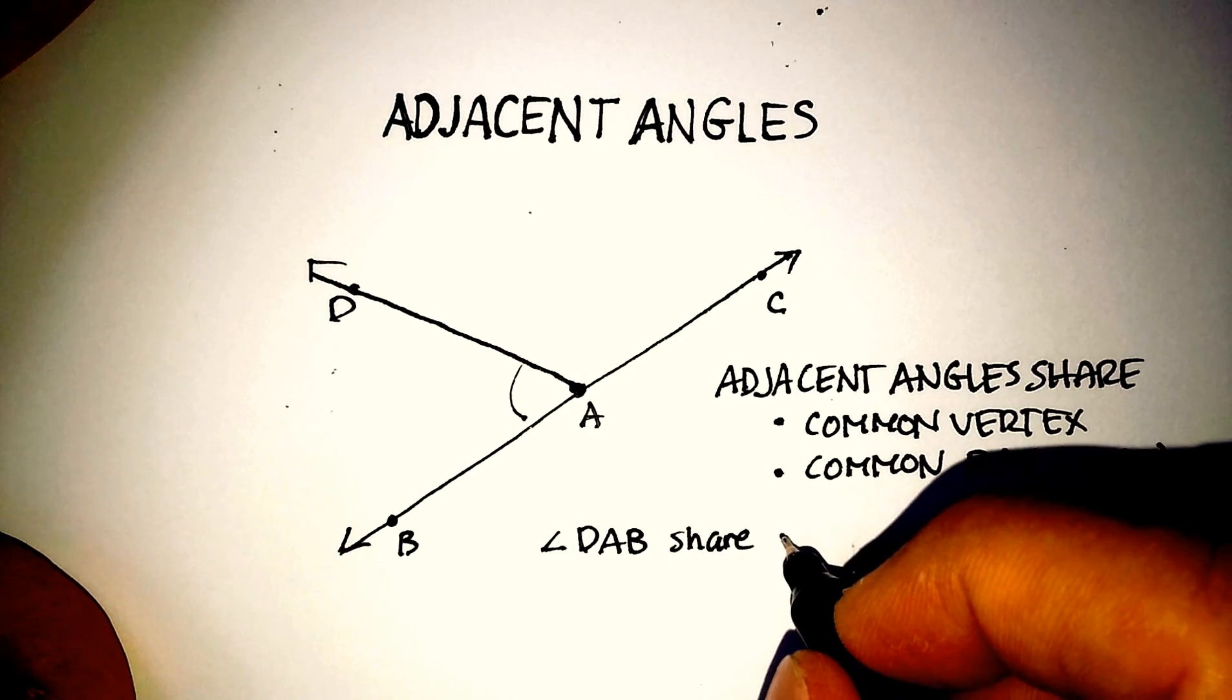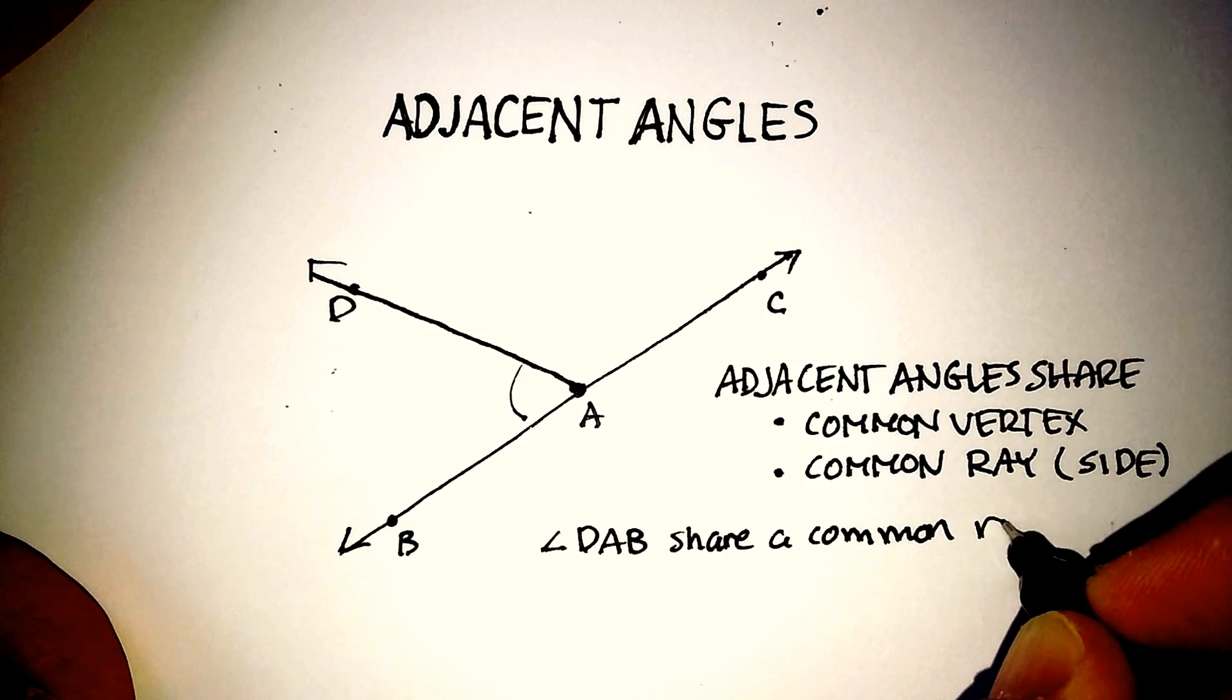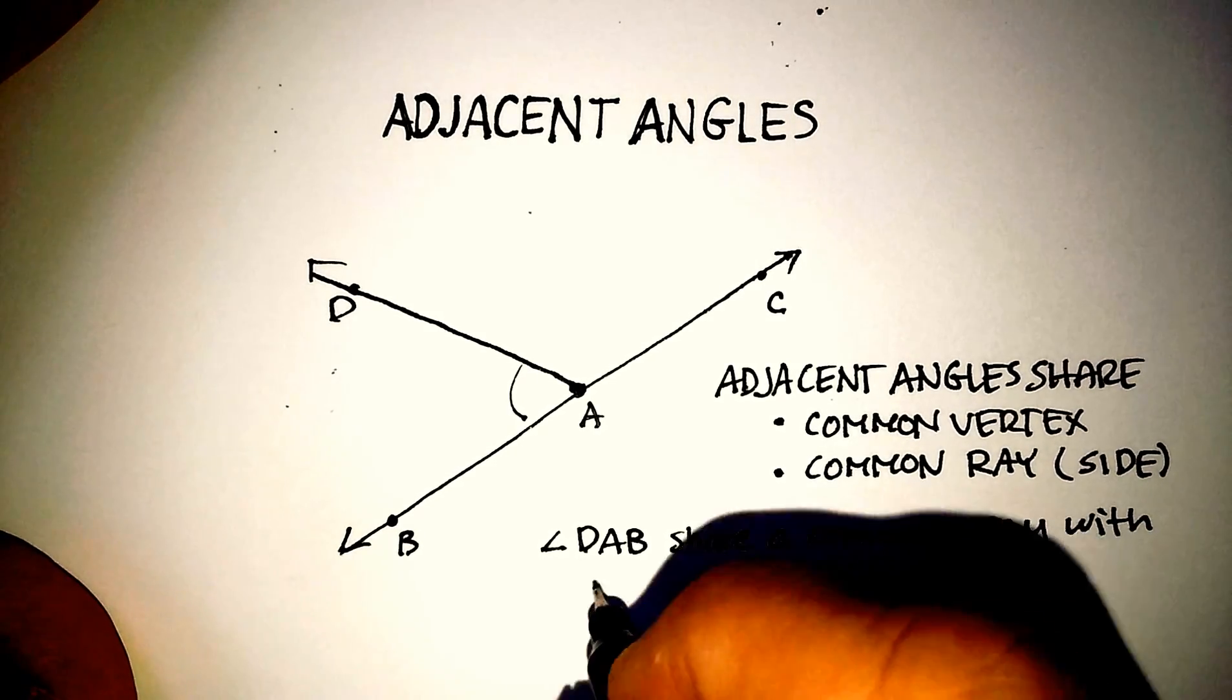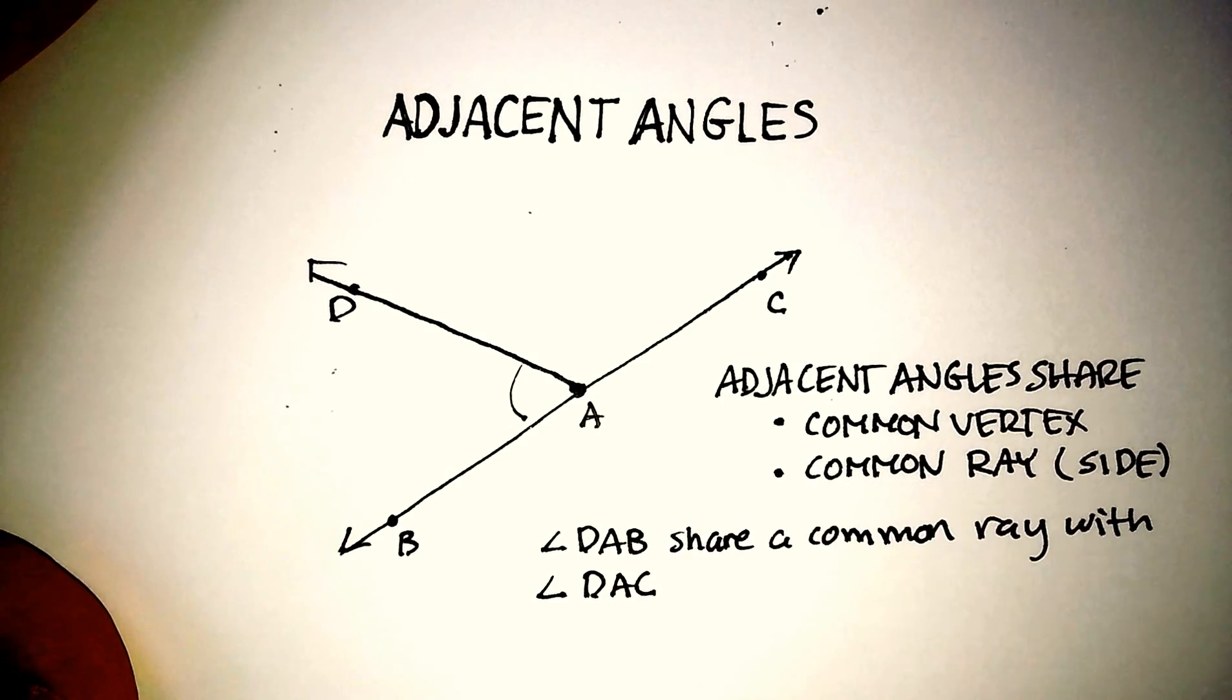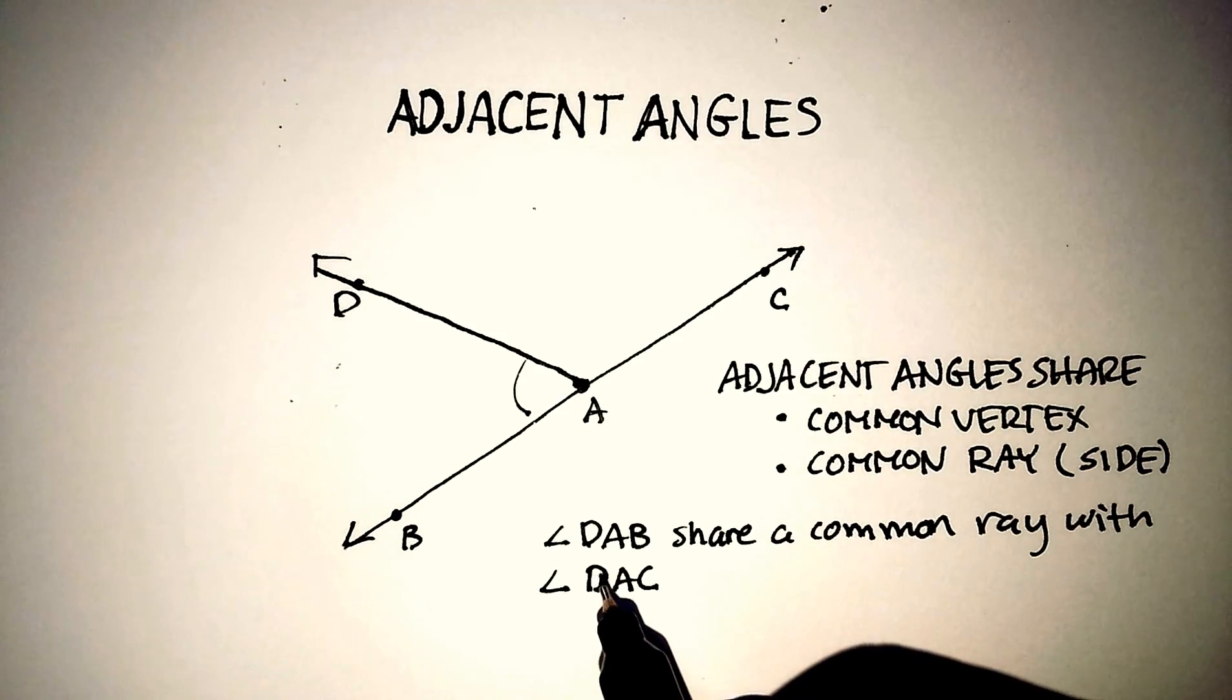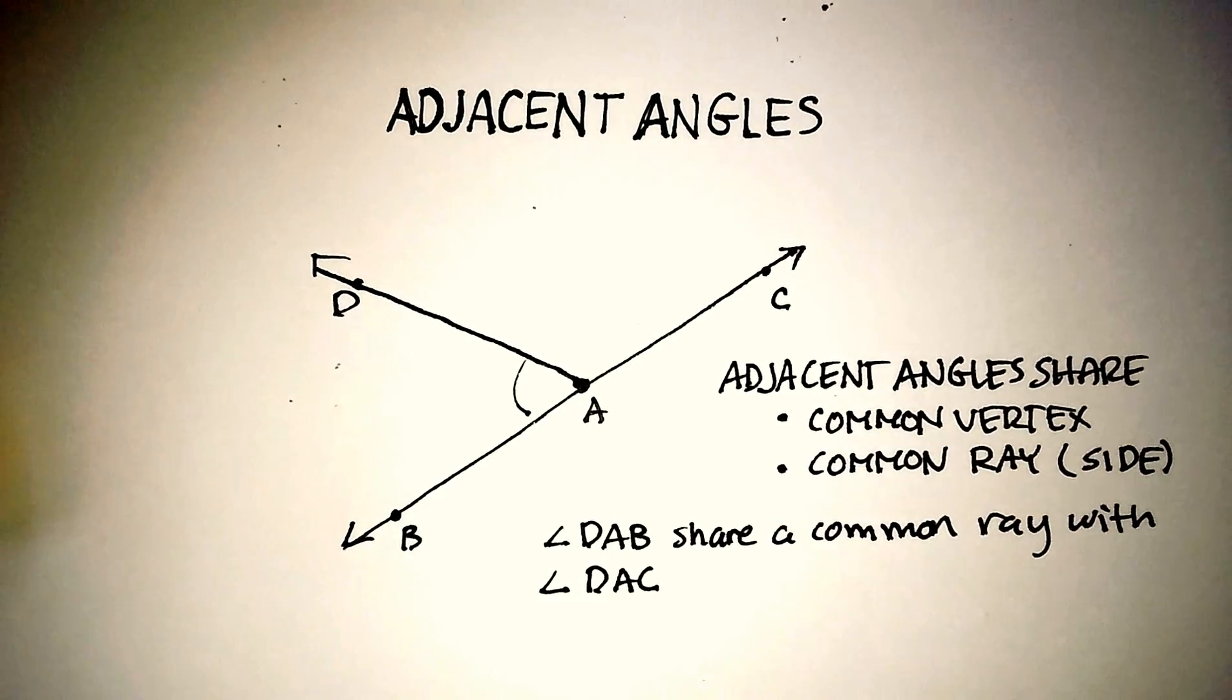They share a common ray with, in this case, angle DAC. You'll notice that the vertex is always in the middle of how you describe these. You never describe it like that. So the vertex is always in the middle.